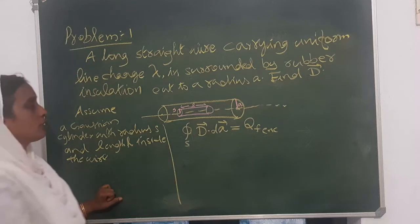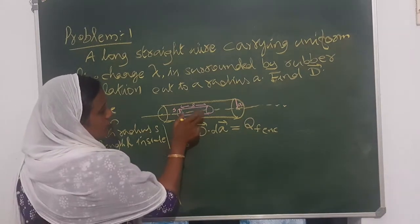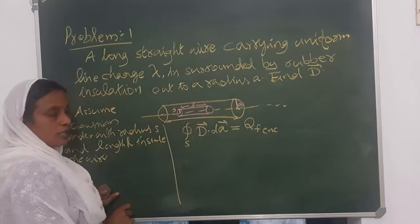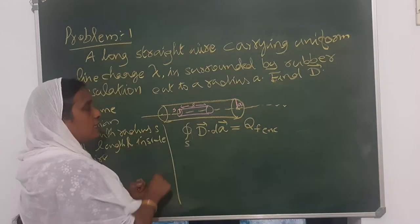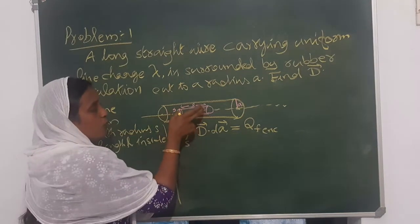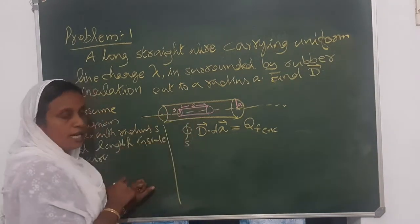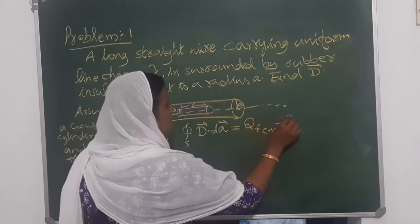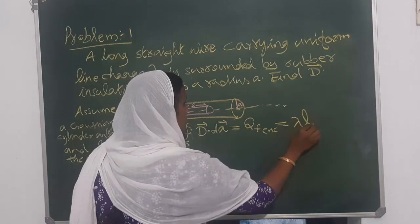And the charge enclosed by this Gaussian cylinder is given by: we know that the charge per unit length is lambda, and we assume the Gaussian cylinder of length L. So the charge enclosed by the Gaussian cylinder is given by lambda L.